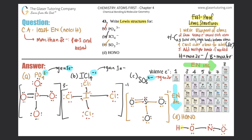Nitrogen has two, four, six, seven — it could use more. And the terminal oxygen has two, four, six, seven. But there's one electron on nitrogen and one on oxygen, so I bring that electron over and form a double bond between nitrogen and oxygen. Now nitrogen has two, four, six, eight — that's the octet. And the terminal oxygen has two, four, six, eight. Everybody is happy. There's no charge, so no brackets needed. Box the answer — part D is done, and problem 43 is complete.